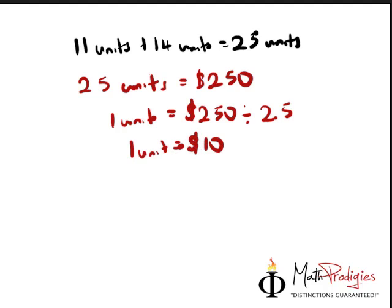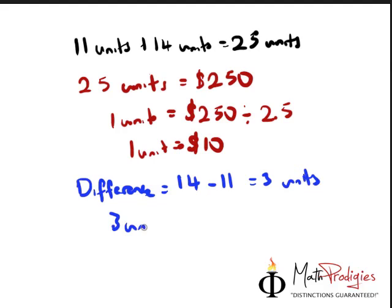Now they're asking for the difference. I'm going to use the blue marker. The difference equals 14 minus 11, which gives you 3 units. So 3 units equals $10 times 3, which gives you $30. That means the difference is $30.